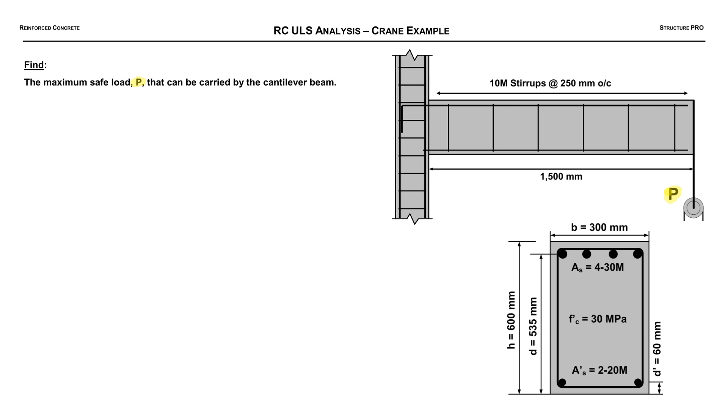When we hear maximum safe load, that should make us think ultimate limit state, ULS. We're going to be using A23.3, the Canadian concrete code, similar to ACI 318. Let's dive into this example.